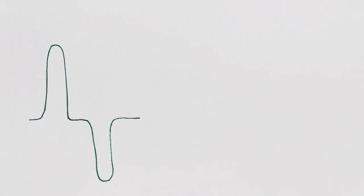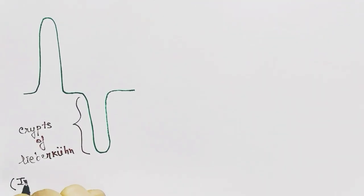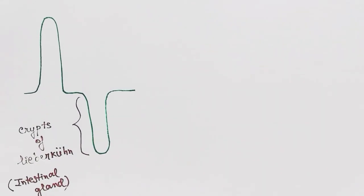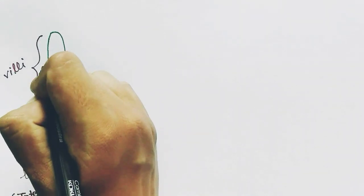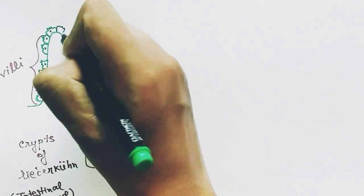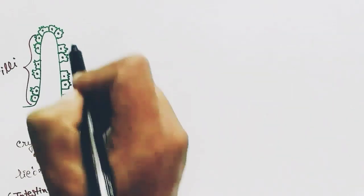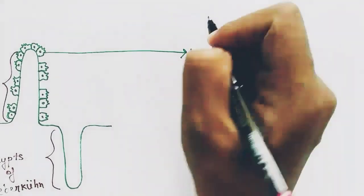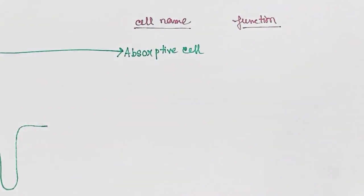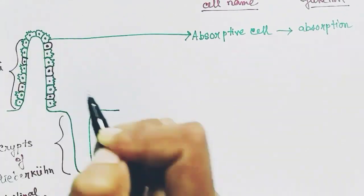This is the villi of the mucosa layer, and this invagination is also called the crypts of Lieberkühn or the intestinal gland. The villi have cells that are columnar in shape and are responsible for the absorption of nutrition from food. They have microvilli for more surface area and more absorption. These are the absorptive cells, and the villi also have blood supplies for absorption. The absorptive cells absorb the nutrition and pass it to the blood.